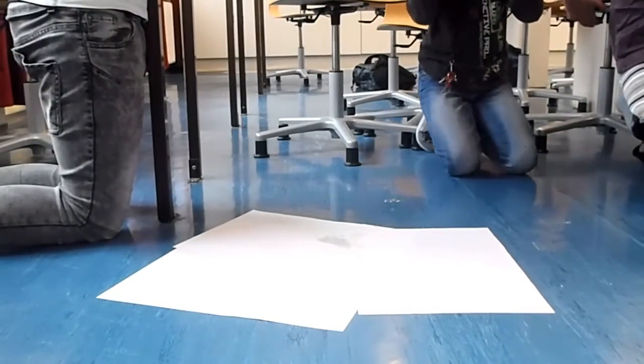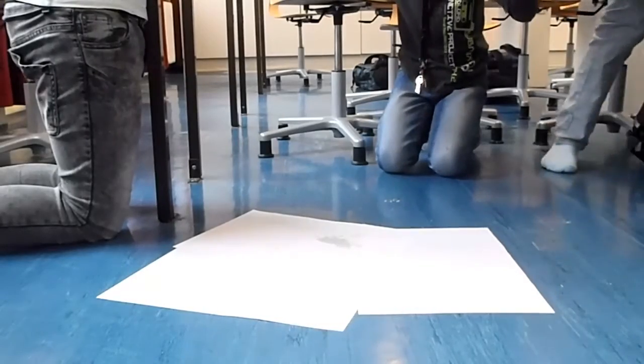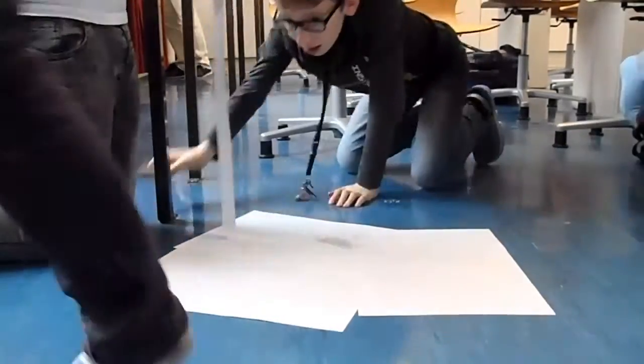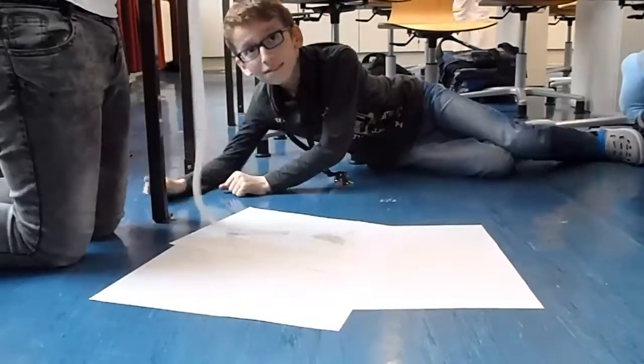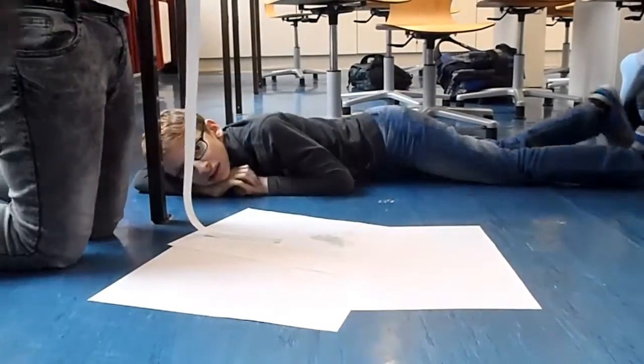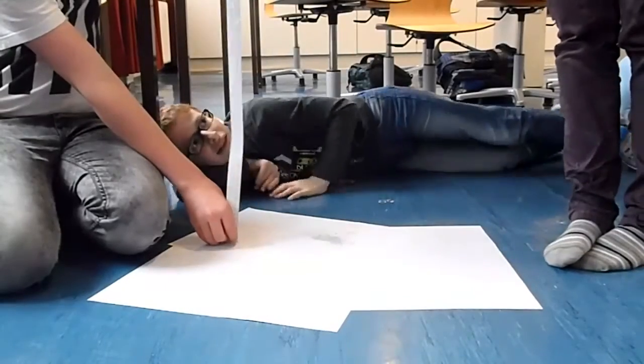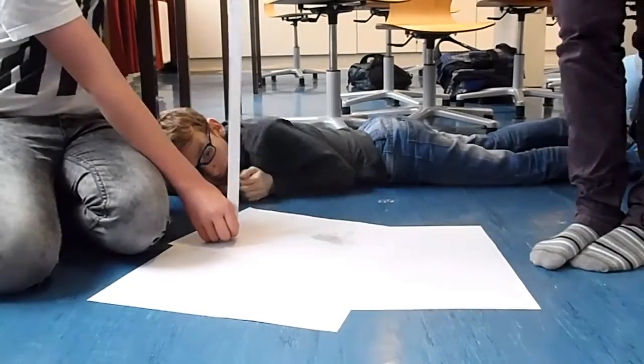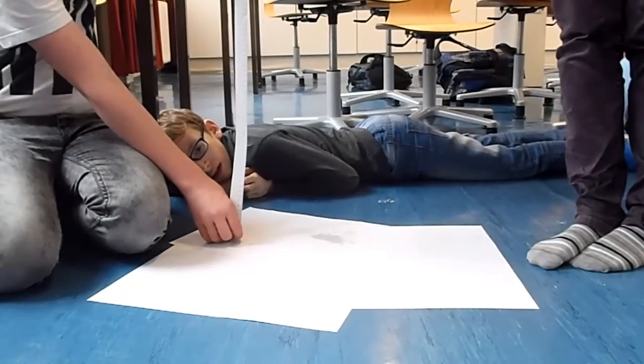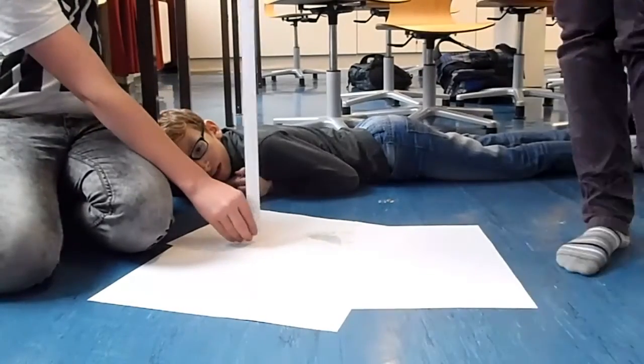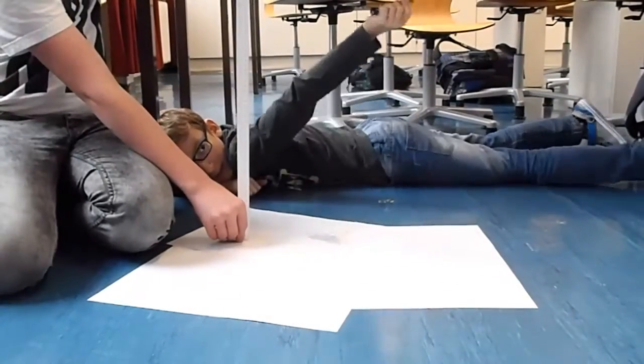Das Endergebnis des Versuches ergab, wenn ein Butterbrot auf die Butterseite fällt, hängt es sehr wohl von der Tischhöhe ab. Allerdings kann man keine konstanten Intervalle feststellen, in denen das Butterbrot auf die Brotseite fällt. Allerdings hängt es auch sehr von der Geschwindigkeit ab, von der das Brot vom Tisch gelegt wird.